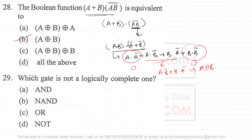Question 29 asks which gate is not logically complete. NOT is logically complete on its own — actually, it is not by itself all-logically-complete. NAND is logically complete, so NAND gate is logically complete in every sense. Now let us look at the next set of questions.